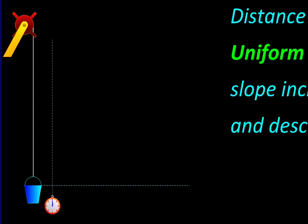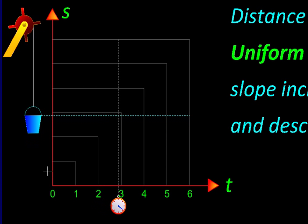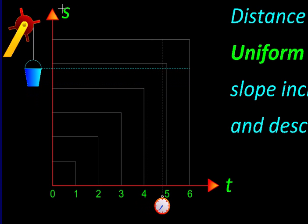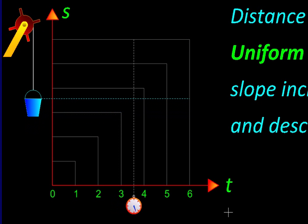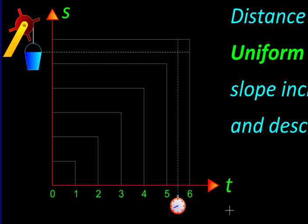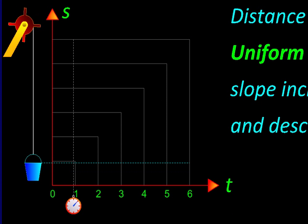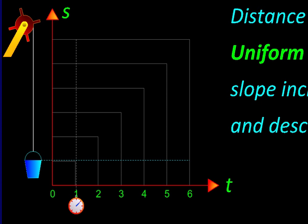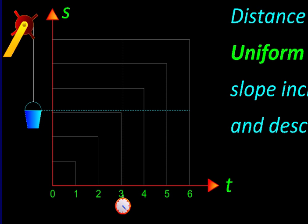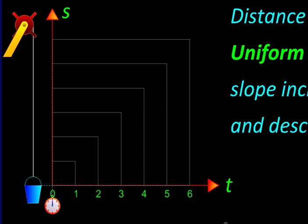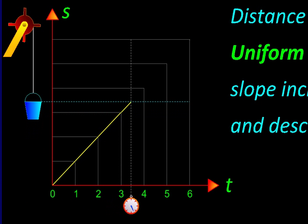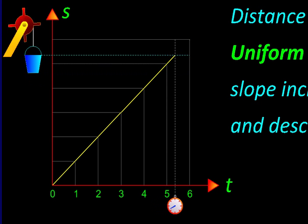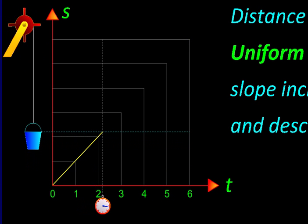To observe this motion more clearly, let us have some reference lines or a grid. So on the vertical axis we have the distance and the horizontal axis we have time. You would notice that the bucket is covering equal distances in equal intervals of time. Therefore, if we plot a graph of these two quantities, we will get a very interesting curve: a straight line. So for uniform motion, the graph of distance against time is a straight line.